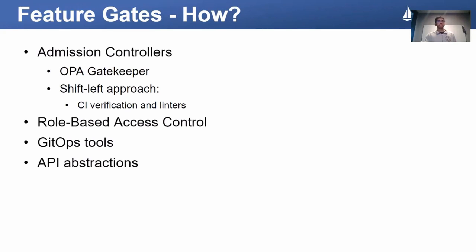We have several items in our toolkit for establishing these guardrails in our mesh environment. We could use Kubernetes admission controllers, or take a shift-left approach and do some of these validations at a CI level. We have role-based access control to restrict capabilities to cluster admins. We could use GitOps tools to prevent configuration drift and enforce configuration specifications through configuration as code. And we could also develop API abstraction layers on top of Istio custom resources to selectively expose certain fields in the Istio APIs to developers.